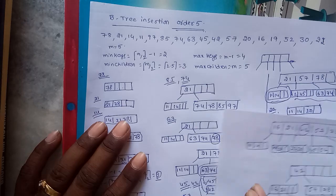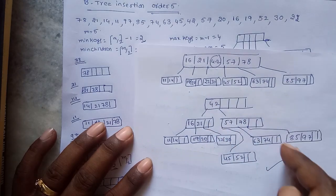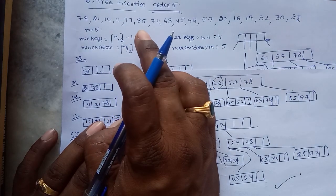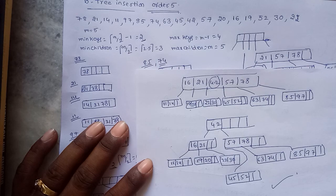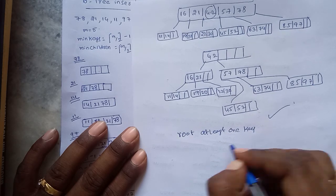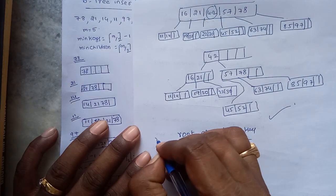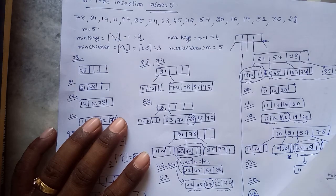Observe that some nodes have only one key. This is 100% correct — the minimum key rule (minimum 2 keys) applies to all internal nodes except the root. The root can contain at least one element. So this property is satisfied. This is the B-tree of order 5. Thank you.